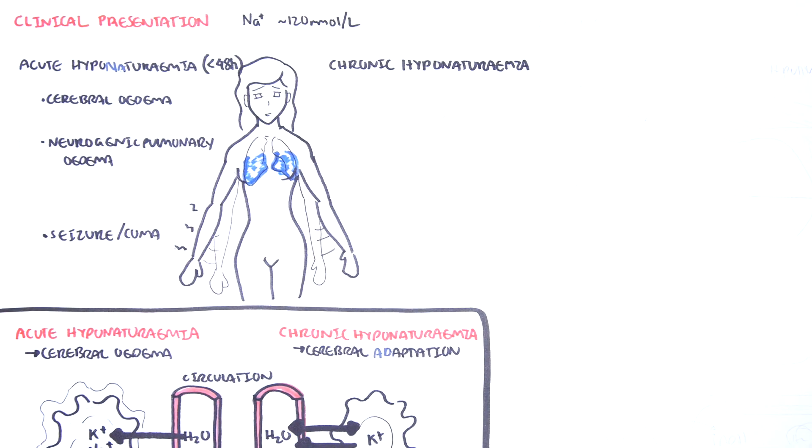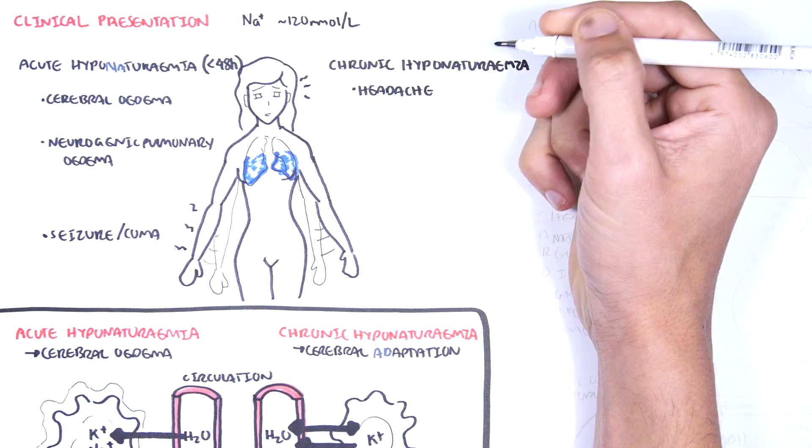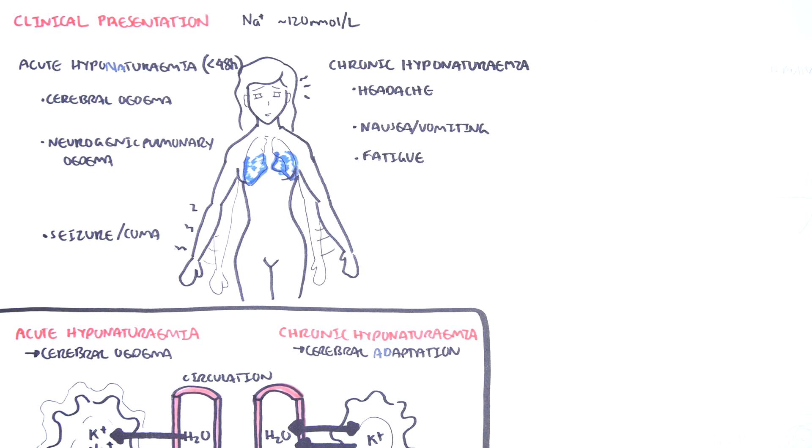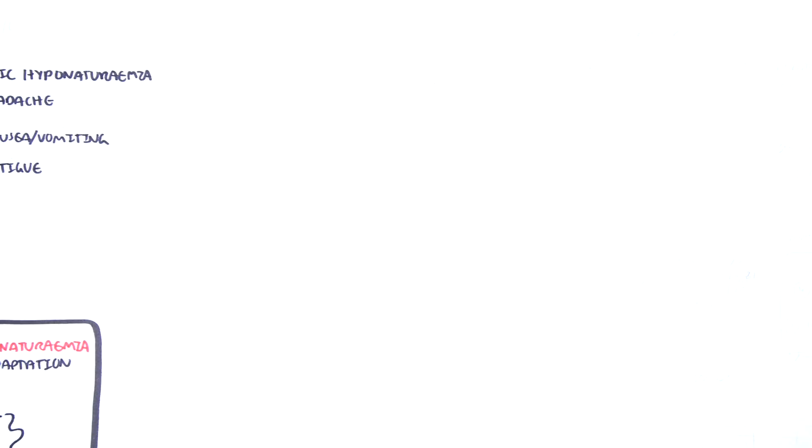Chronic hyponatremia is characterized by nonspecific signs and symptoms such as headache, nausea, vomiting, and seizures. The other signs and symptoms of SIADH will depend on the cause of the SIADH.